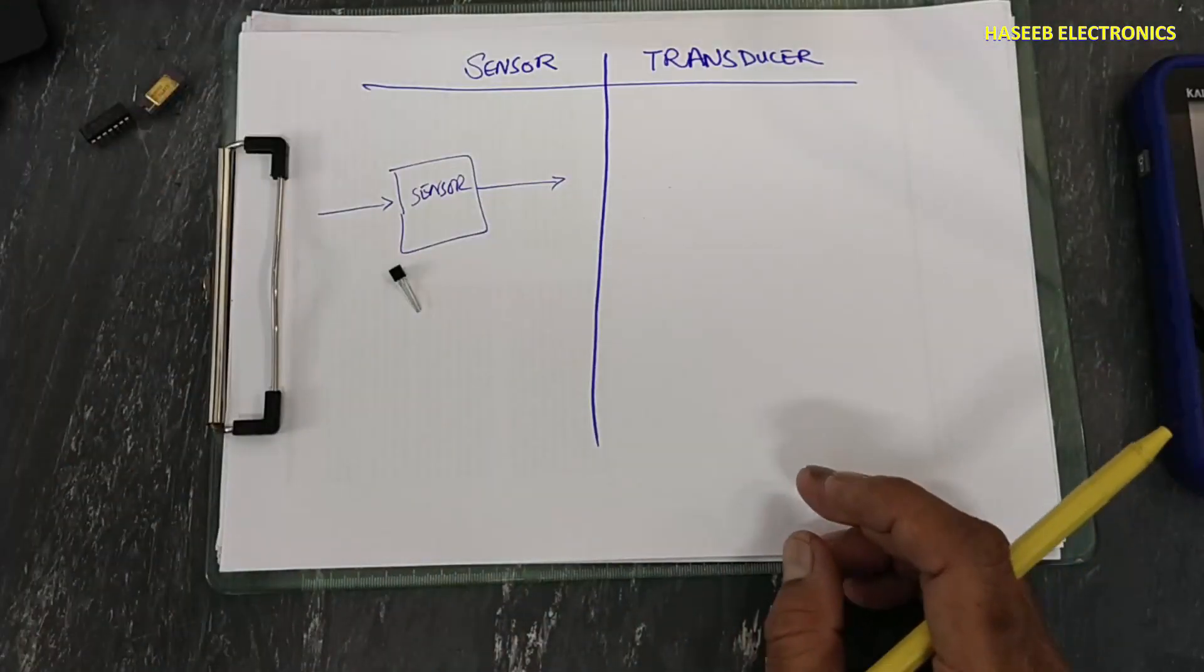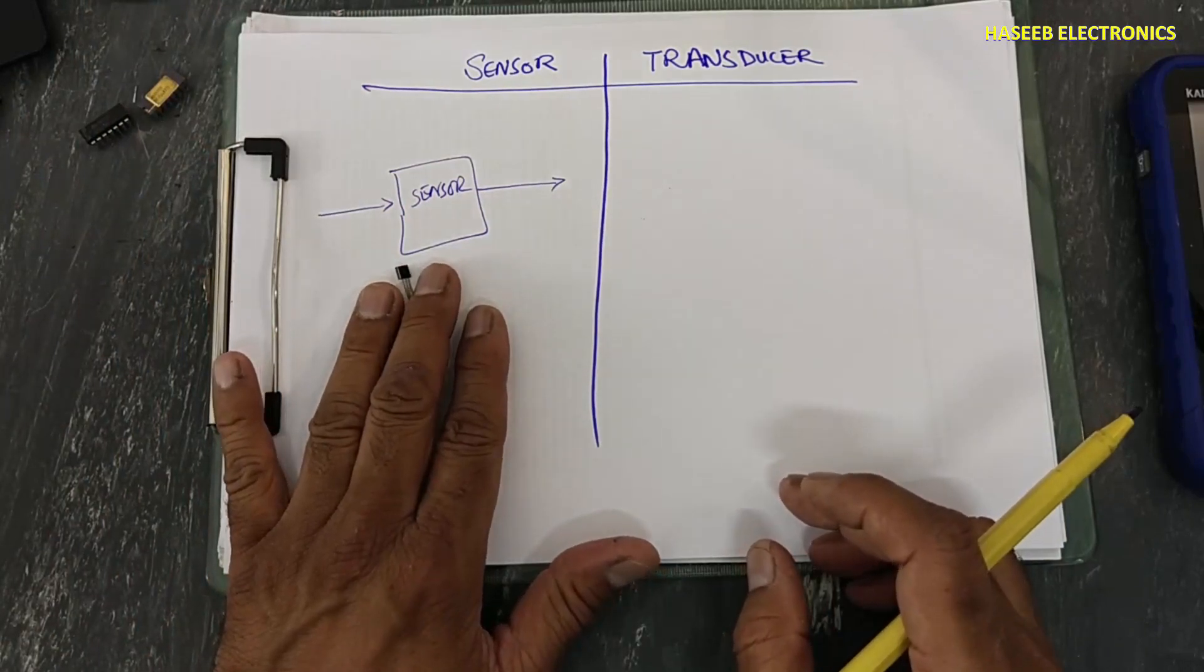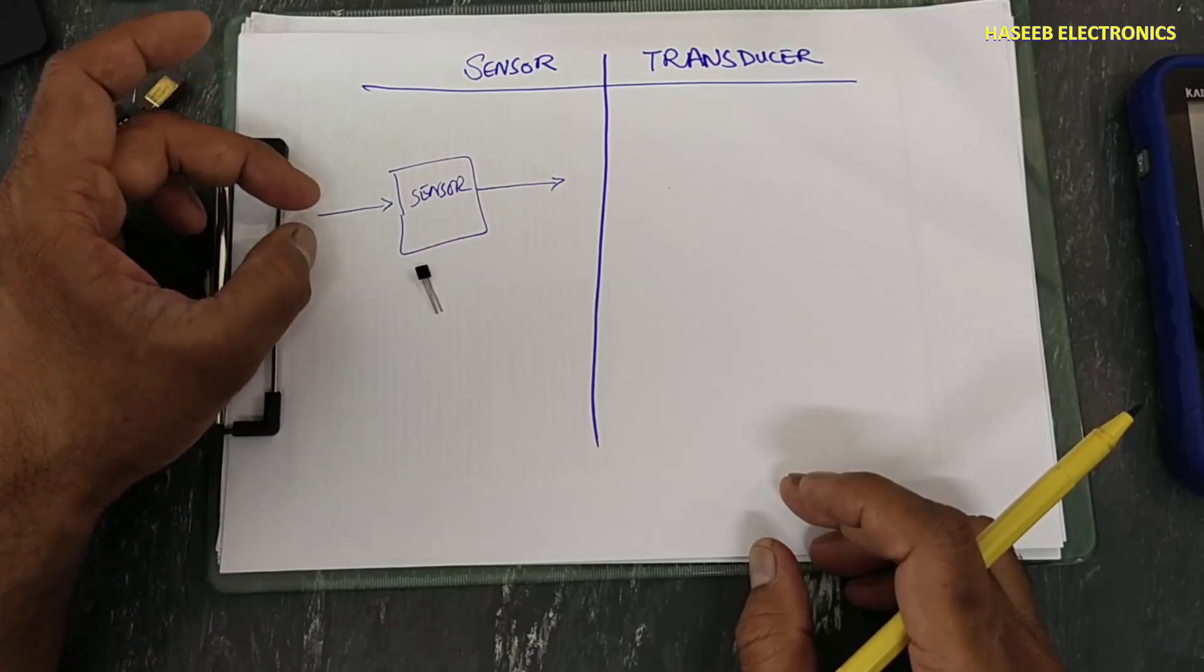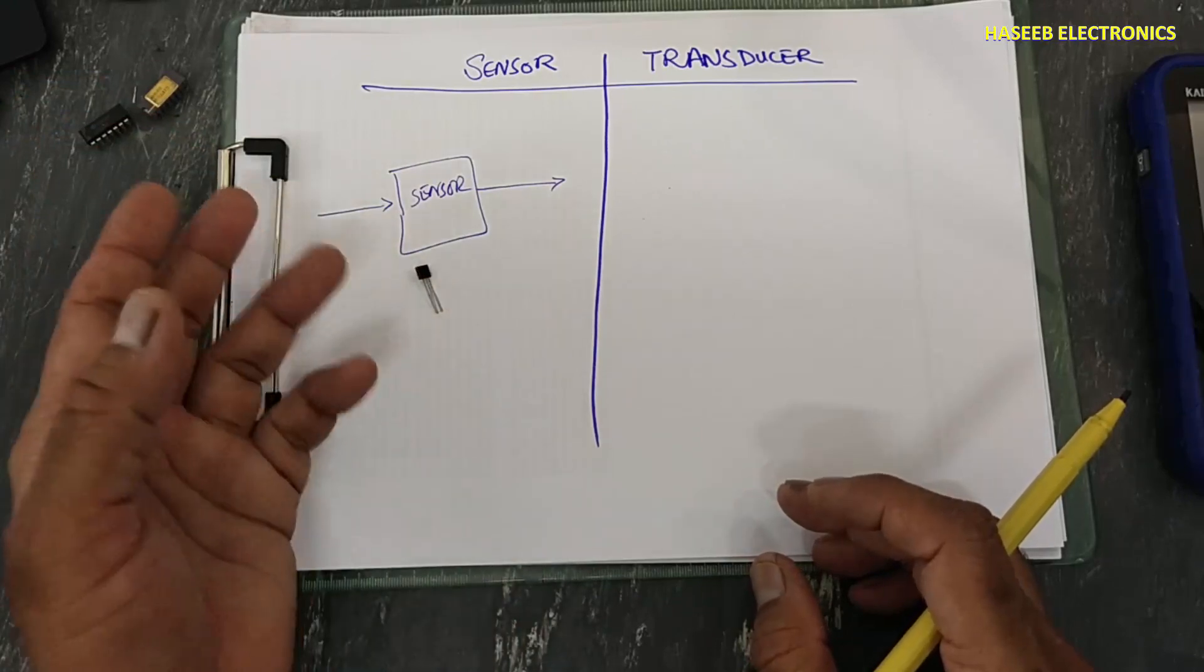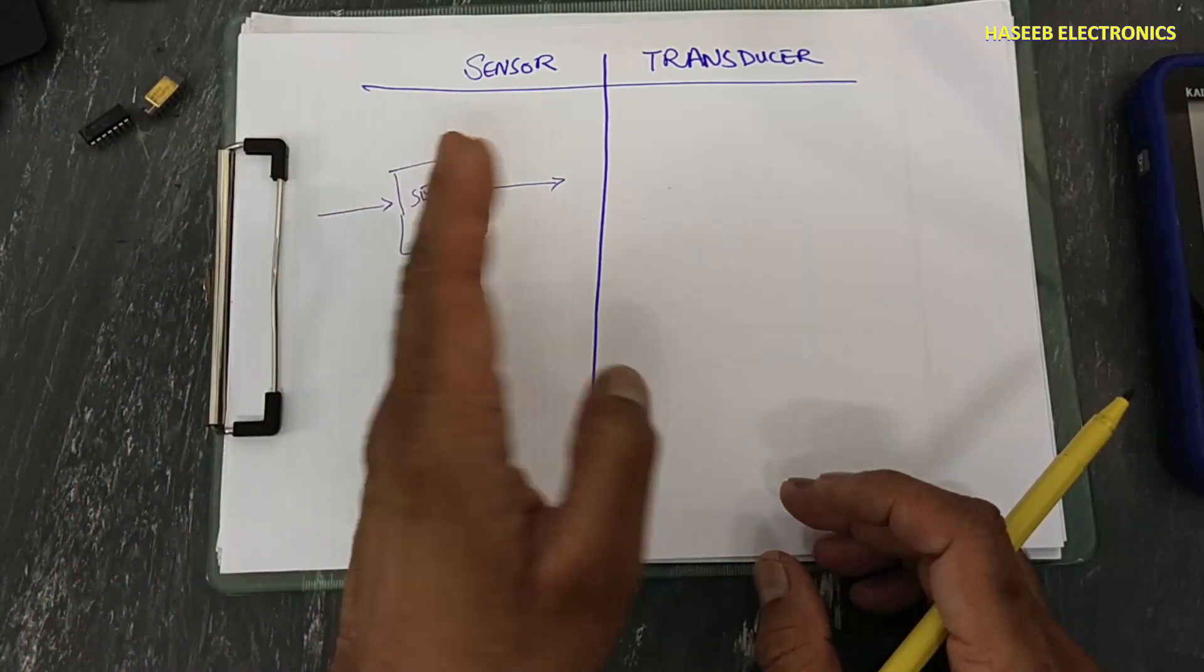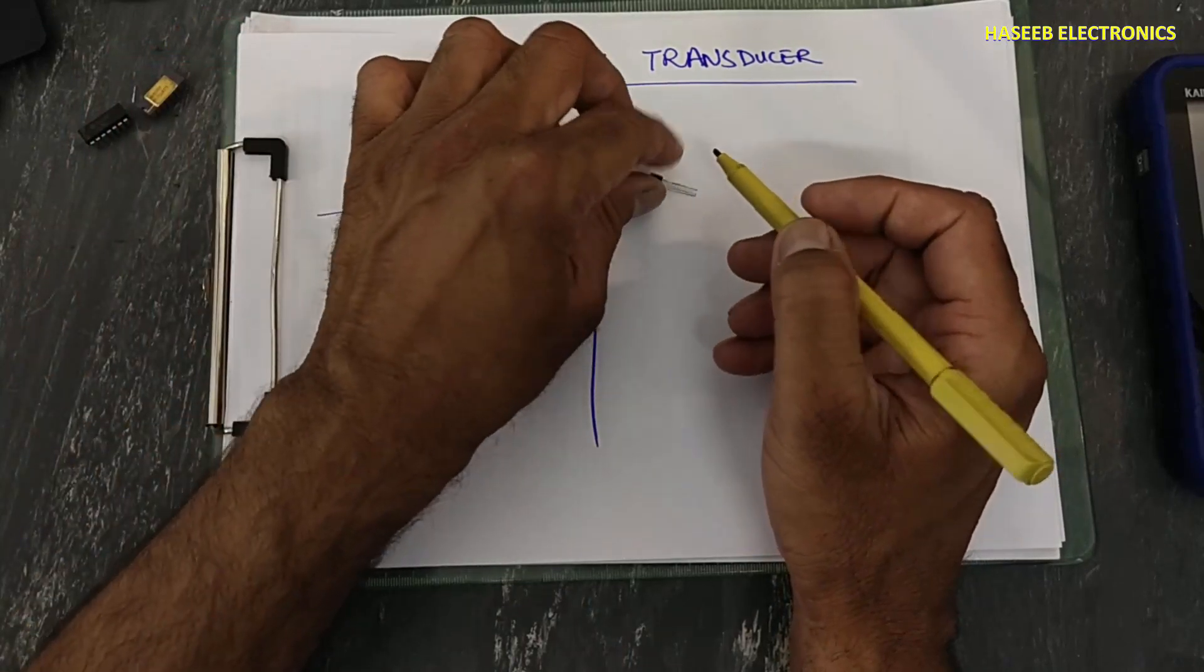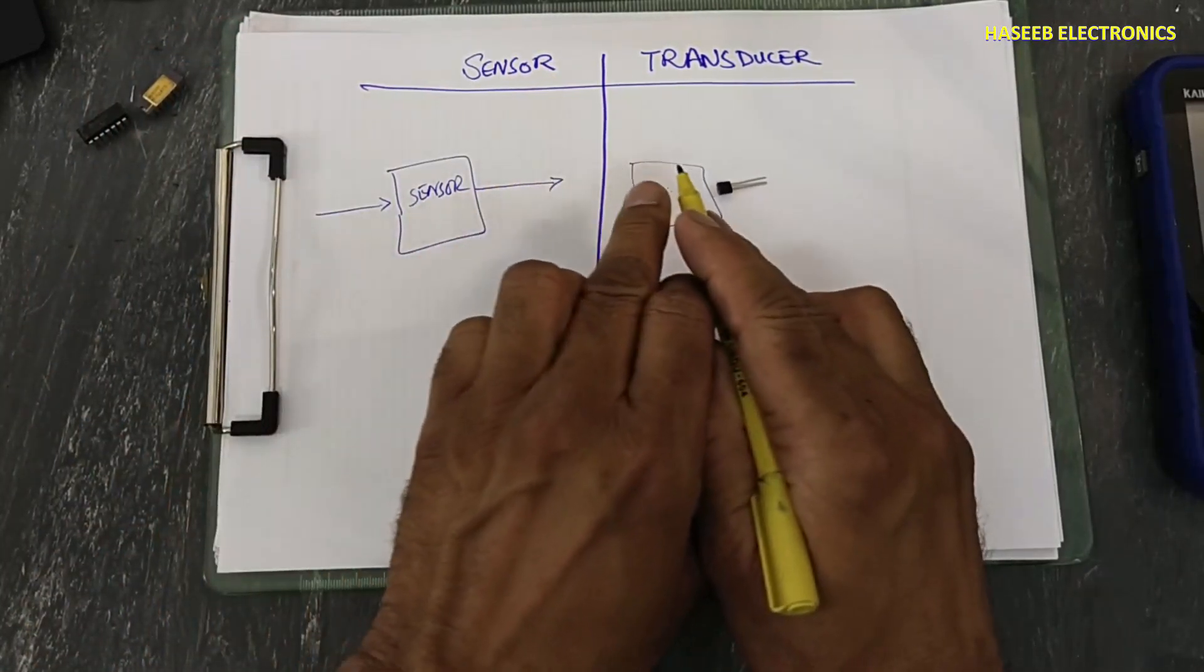This is function of sensor: any component that receives one physical quantity of any type of energy, then it will convert into electrical signal. But when this sensor is here, it will perform the same function. The same signal will reach here.